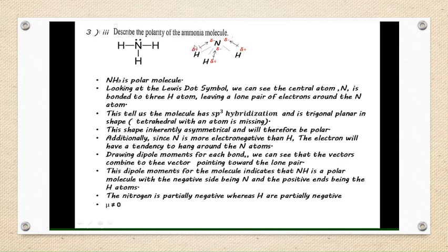So H is partially positive and N is partially negative. The dipole moment arrows point from partially positive H to partially negative N for each N–H bond.